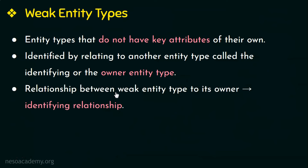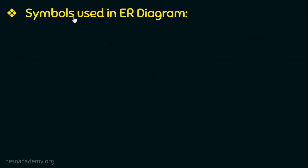The relationship between a weak entity type and its owner entity type is called the identifying relationship. Now let us look into the different symbols that we use in the ER diagram.